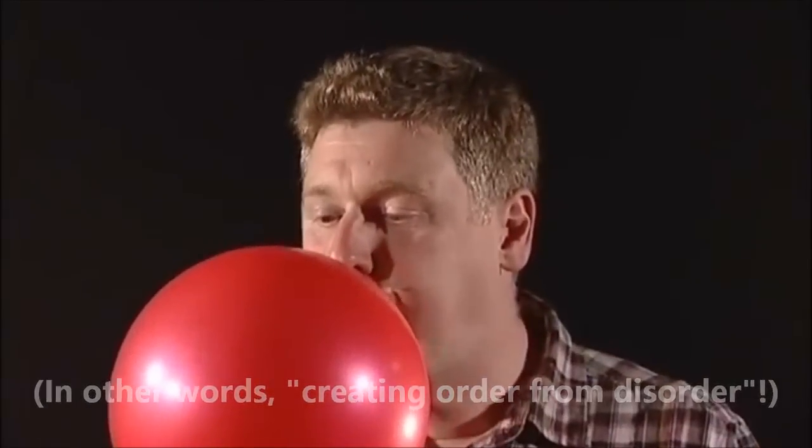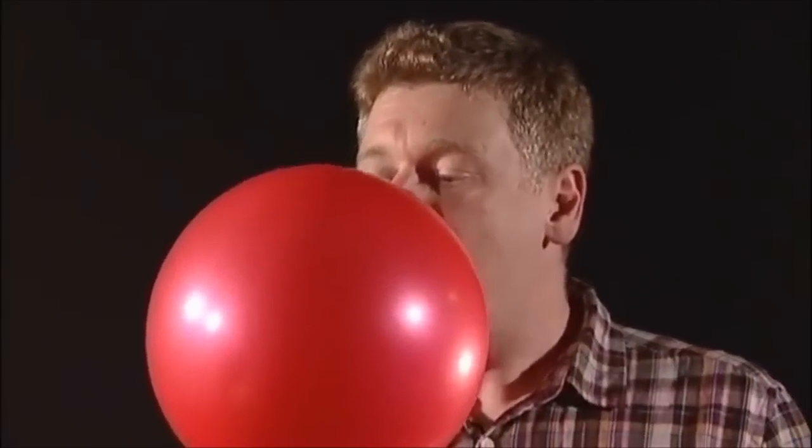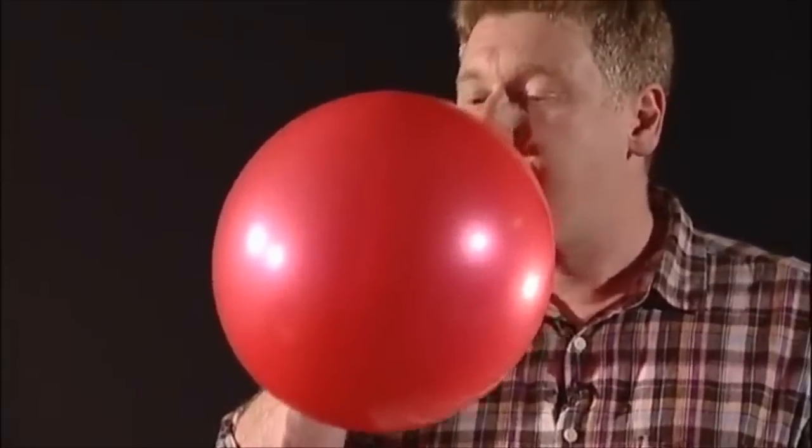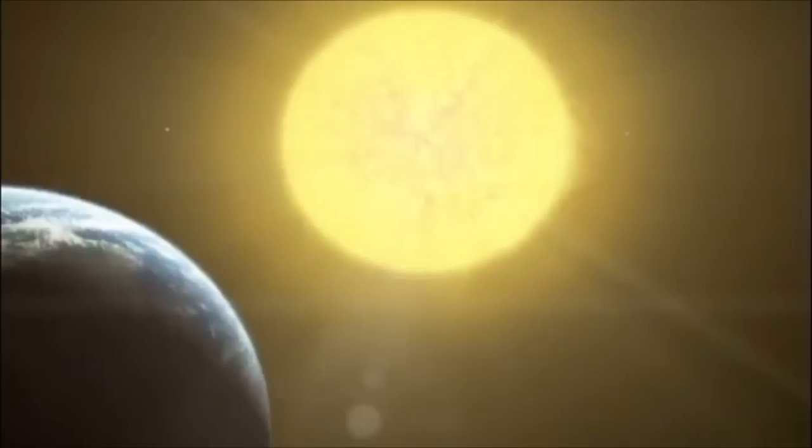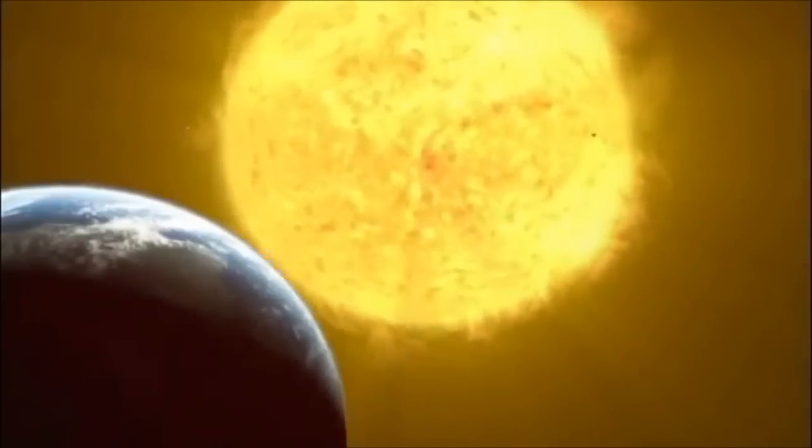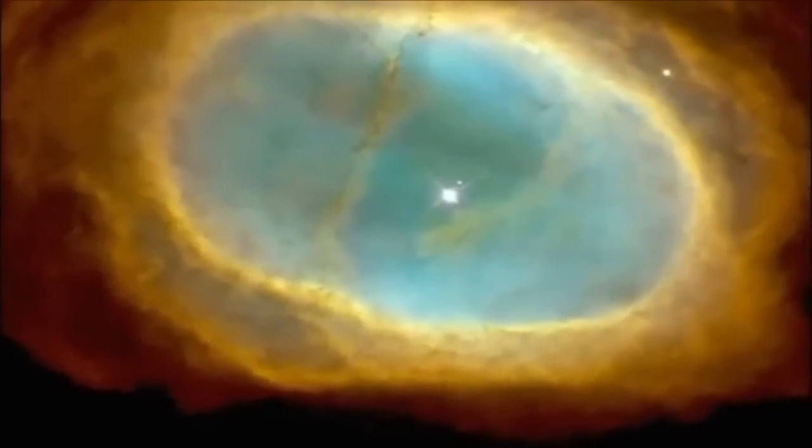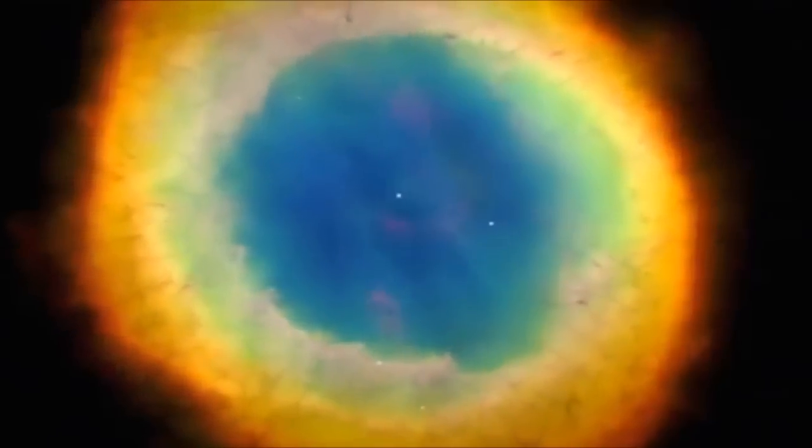As the star begins to fuse helium, it creates more energy, and that causes the outer layers of the star to expand. One day, our sun will grow so large, it will swallow up the inner planets of the solar system out as far as the earth. It will become a red giant. For the sun, this will be the beginning of the end. What happens is that the outer layers of the star get farther and farther from the middle. The force of gravity that they feel is getting weaker and weaker, and actually, the star loses hold of its outer atmosphere. Its outer atmosphere drifts off out into space. It expands out to become a planetary nebula, and they're some of the most beautiful objects in the universe.